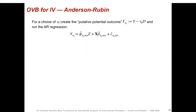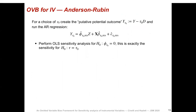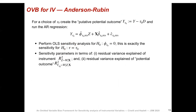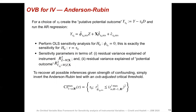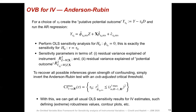Moving to the sensitivity of the IV estimate itself, this can be easily performed within the Anderson-Rubin framework. For a choice of tau-naught, we create the putative potential outcome and run the Anderson-Rubin regression. Performing OVB sensitivity analysis for the null hypothesis that phi is zero is exactly the sensitivity analysis for the null hypothesis that the causal effect equals tau-naught. The key difference is that the parameters are now in terms of residual variation explained of the instrument and residual variation explained of the potential outcome. We can recover all possible inferences by inverting the Anderson-Rubin test with the OVB-adjusted critical threshold.